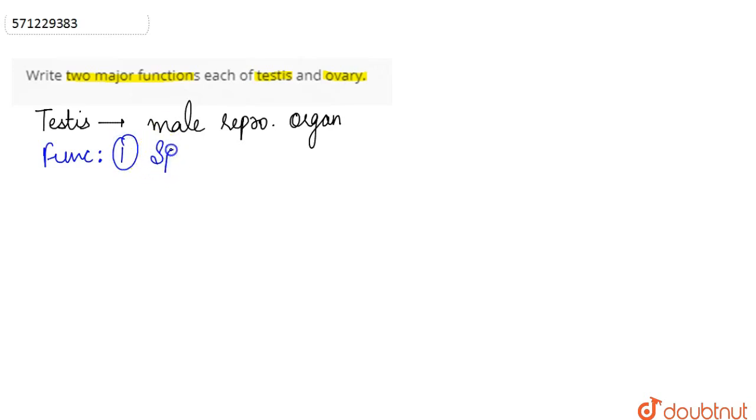Number one, the process of spermatogenesis takes place in the testes, wherein the formation and production of sperm takes place. In simple words, we can say that the spermatogenesis occurs or takes place in the testes.